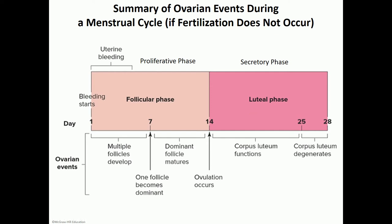What is going on in the uterus? In the first half of the cycle, in the first week, there is uterine bleeding followed by proliferation of the endometrium due to the effect of estrogen. We name that phase in the uterus the proliferative phase. After ovulation, due to the effect of progesterone, there is an increase in blood vessel supply and increase in the glands found inside the endometrium — we name that the secretory phase. The proliferative phase corresponds to the follicular phase in the ovaries, while the secretory phase corresponds to the luteal phase.